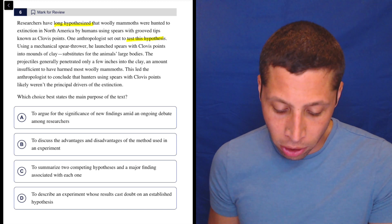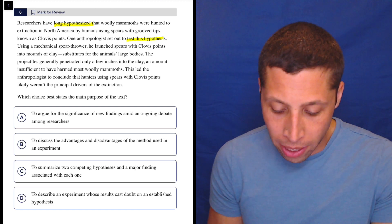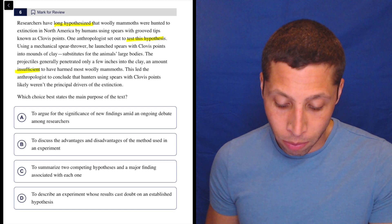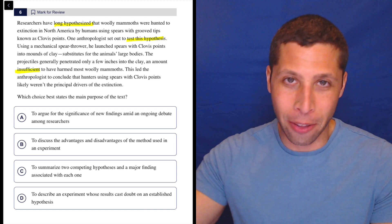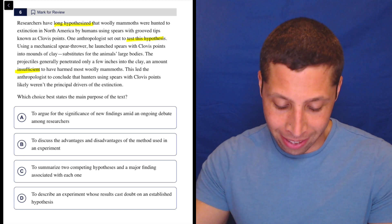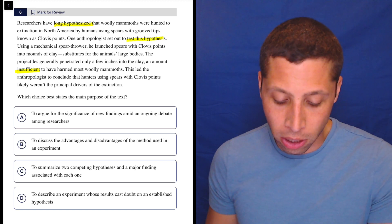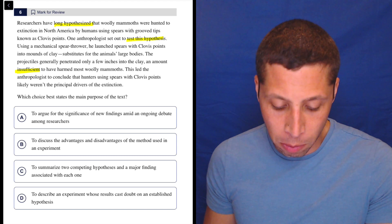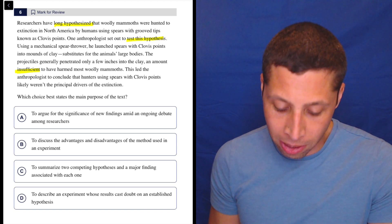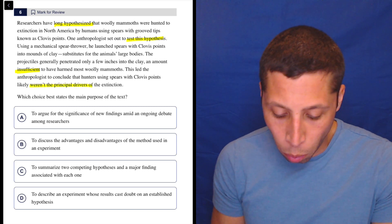The projectiles generally penetrated only a few inches into the clay, an amount insufficient to have harmed most woolly mammoths. So it's insufficient, right? They said this is how they were hunted, but now they're saying it's insufficient. This led the anthropologist to conclude that hunters using spears with Clovis points likely weren't the principal drivers of the extinction.